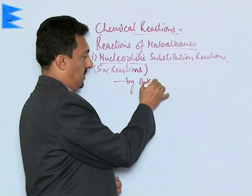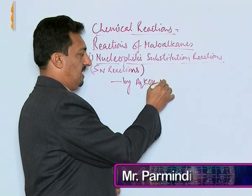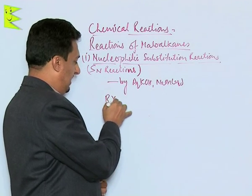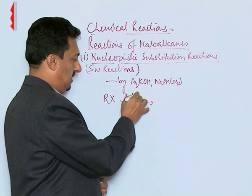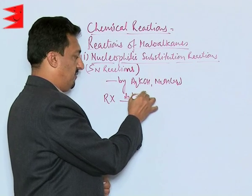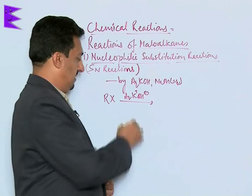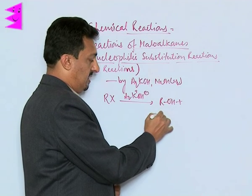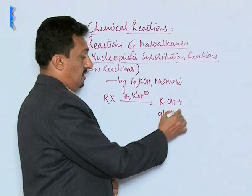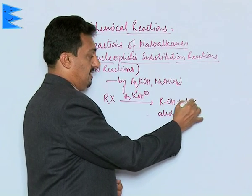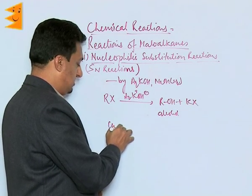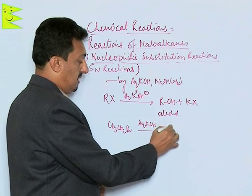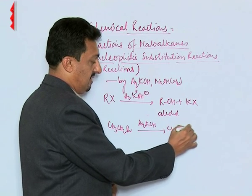Substitution by aqueous KOH or NaOH: when any alkyl halide is treated with aqueous KOH, the hydroxyl ion (OH⁻) acts as the nucleophile and replaces X, giving the corresponding alcohol. This is a very useful reaction for preparing alcohols from alkyl halides.